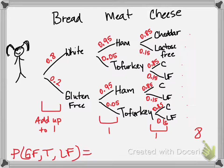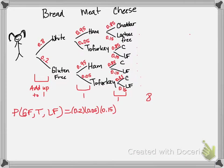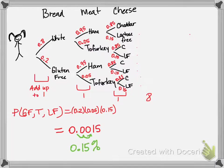Since it's weighted, we take the individual weights and multiply them. This is going to be 0.2 - the probability of gluten-free - times 0.05 - the probability of tofurkey - times 0.15 for lactose-free. If I multiply those out, I get 0.0015. Converting that to a percent by moving the decimal two places, that's a 0.15 percent chance of choosing those three things.